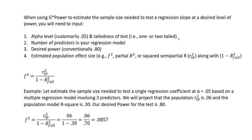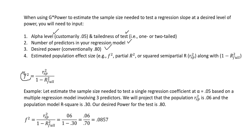Now let's estimate the sample size needed to test a regression slope at a desired level of power — 0.80. We'll need to input our alpha level, the tailedness of our t-test for the regression slope (one or two tailed), the number of predictors, our desired power, and an estimated population effect size — referring specifically to the individual predictor. The F-squared value here can be computed as the ratio of the squared semi-partial correlation for the predictor to 1 minus the R-square for the full model.